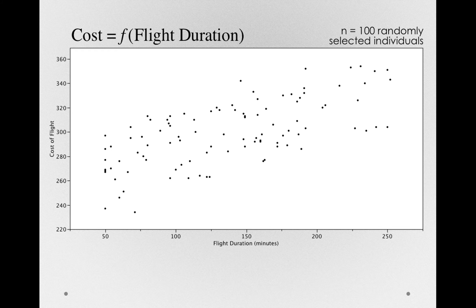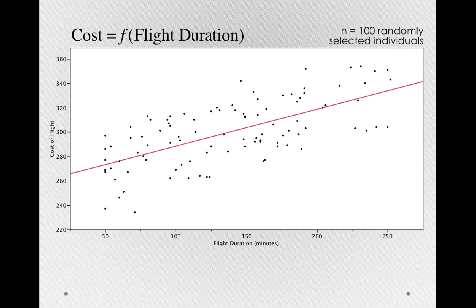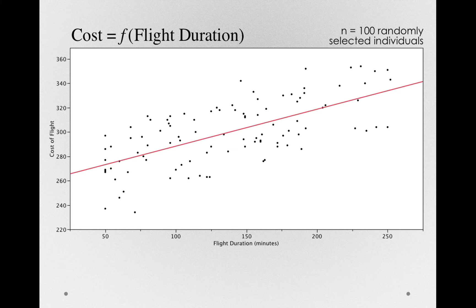How about the duration of the flight? Suppose we ask them to report the duration of the flight, and we end up with this scatterplot. You can probably already see there's a pretty coherent relationship here. These are fabricated data, but I think this is probably going to reflect the truth in the world, which is that flights that are longer typically cost more.